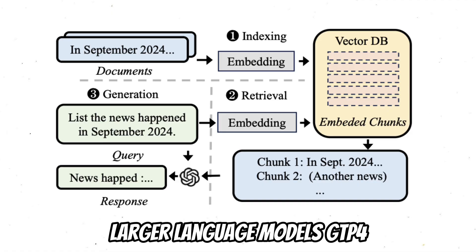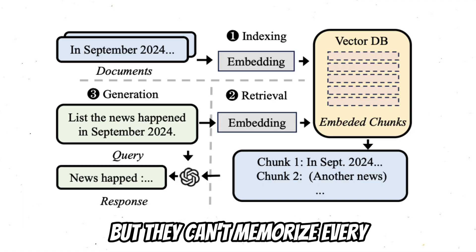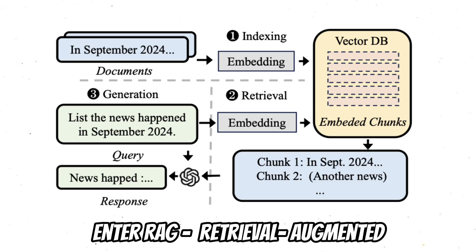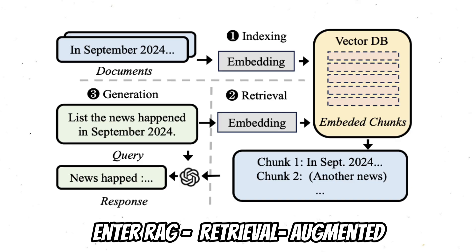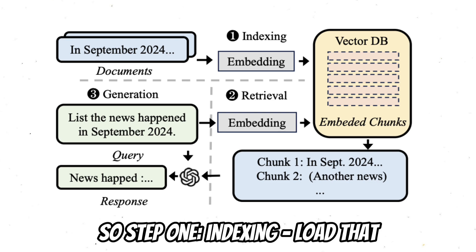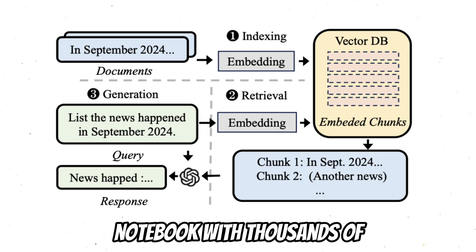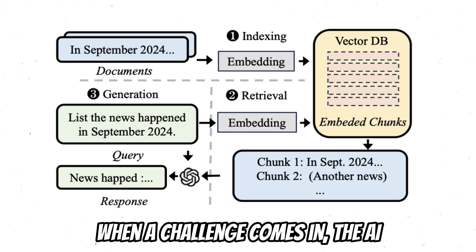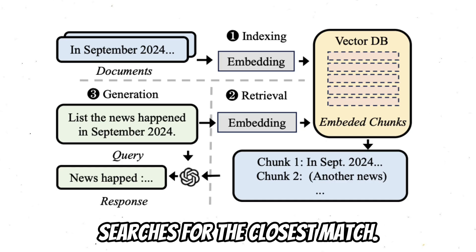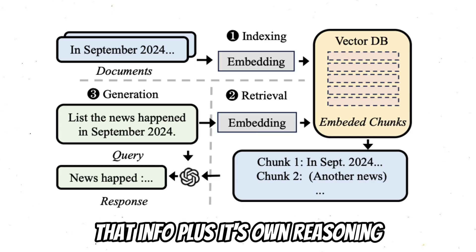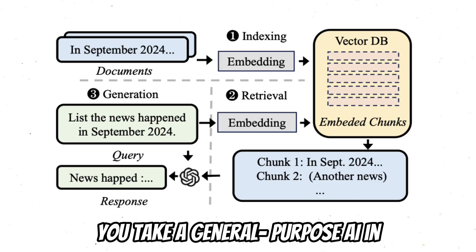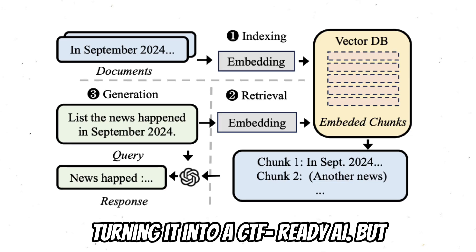Large language models — GPT-4, Llama, Mixtral — are powerful, but they can't memorize every payload or technique. Enter RAG: Retrieval Augmented Generation. Think of it as the AI's personal hacking notebook. Step 1: Indexing — load that notebook with thousands of write-ups, payloads, and past solutions. Step 2: Retrieval — when a challenge comes in, the AI searches for the closest match. Step 3: Generation — it uses that info plus its own reasoning to craft the exploit. That's how you take a general-purpose AI and turn it into a CTF-ready AI.